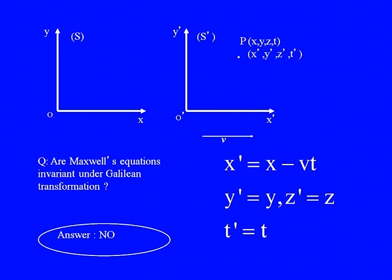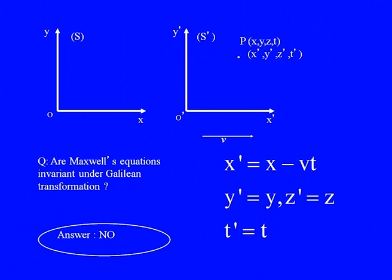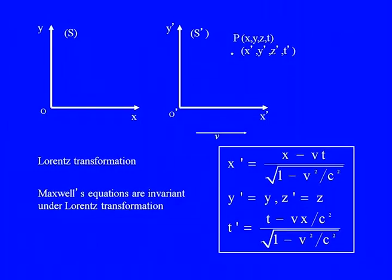Are Maxwell's equations invariant under Galilean transformations — the transformations under which mechanics is invariant? The answer is no. They are invariant under a different transformation. Maxwell's equations are not invariant under Galilean transformation, but they are invariant under the Lorentz transformation.